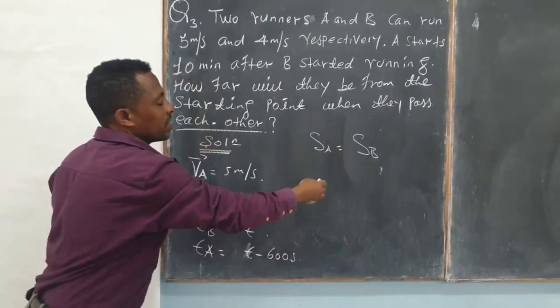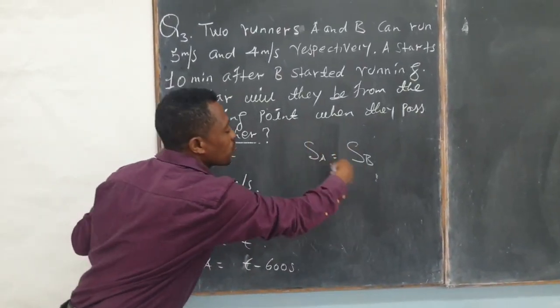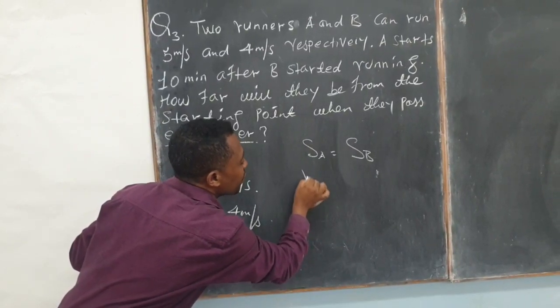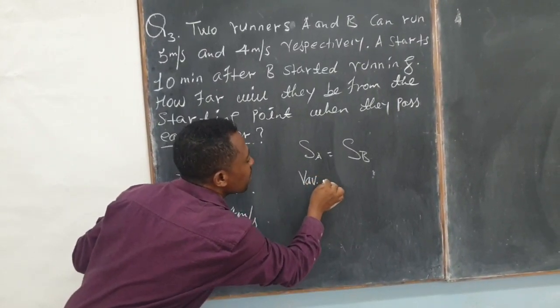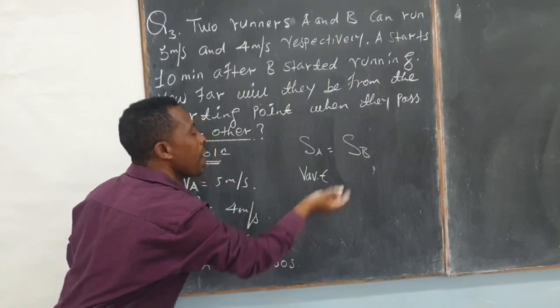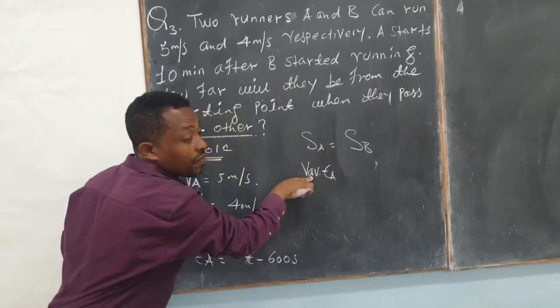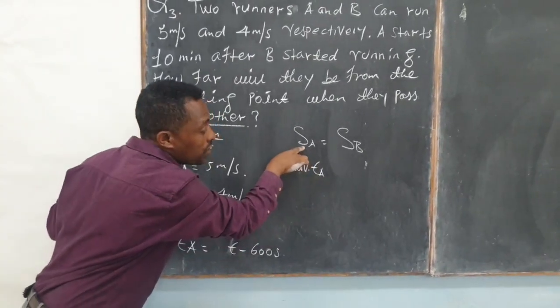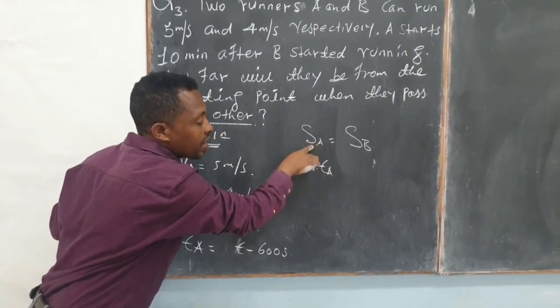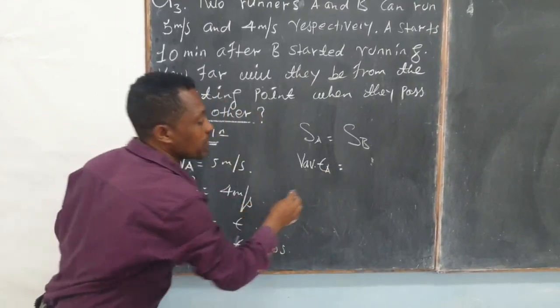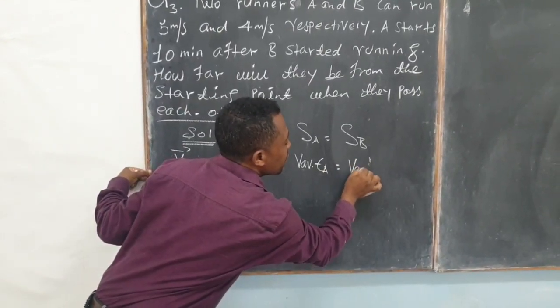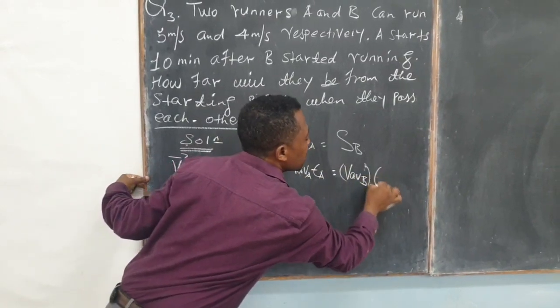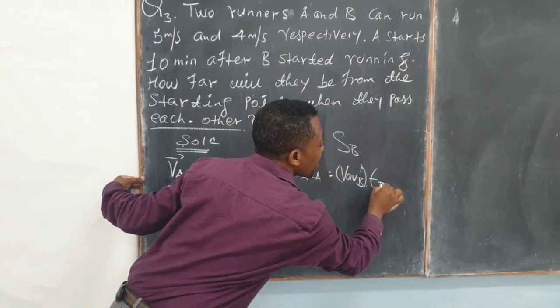But we know that distance or displacement means simply the velocity or average velocity times the time taken by A. This is average velocity of A times the total time taken by runner A, which should be equivalent with average velocity of B times the total time required by runner B.